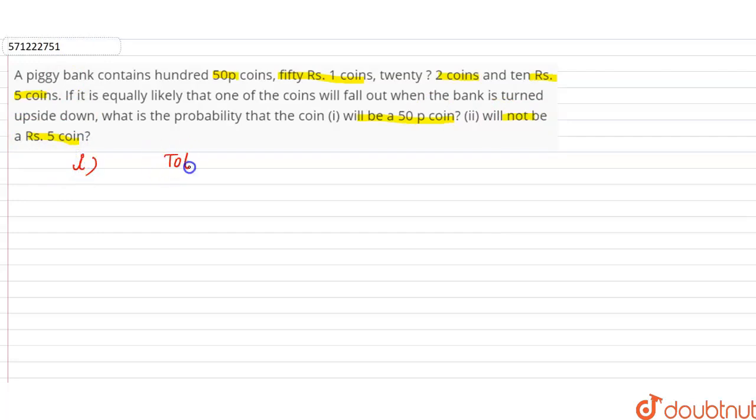Let's find the total number of coins. Total number of coins are: 100 fifty-paise coins, plus 50 one-rupee coins, plus 20 two-rupee coins, plus 10 five-rupee coins. So this equals 100 plus 50 equals 150, plus 20 equals 170, plus 10 equals 180. So the total number of coins is 180.